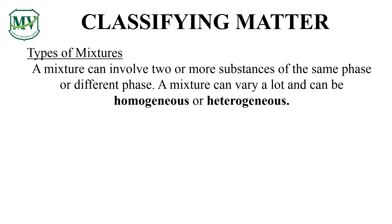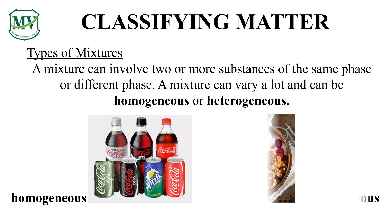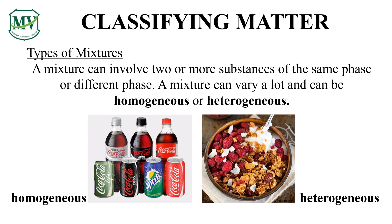A mixture can be homogeneous or heterogeneous. Cola, or soda, is a homogeneous mixture of carbonated water and sugar. You can't see the individual substances that make up the cola. But the mixture of cereal, milk, and fruits in a bowl is a heterogeneous mixture, because you can see the individual substances of this mixture. Do you now understand the difference between a homogeneous and heterogeneous mixture? Excellent!